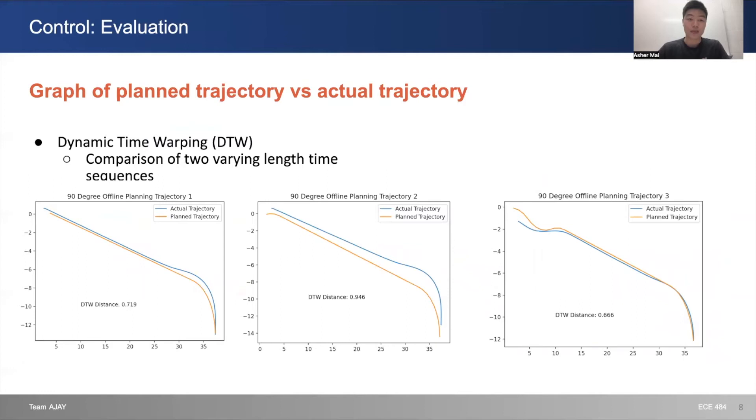DTW, or dynamic time warping, is one of the metrics that we used. Here are three of the trajectories compared to their planned trajectories, and the DTW distances are marked on the graph. We can see that on average, the DTW distance is around 0.7 or 0.8 meters compared to the planned trajectory. So our controller follows the planner pretty well.